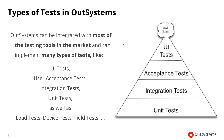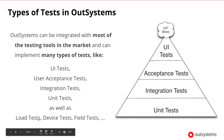OutSystems generates 100% standard mobile and web apps, and this allows the use of most testing tools available in the market. You can implement a lot of different types of tests. There are functional tests, like unit tests, integration tests, acceptance tests, and UI tests. And there are non-functional tests, like load testing, device testing, and field testing.